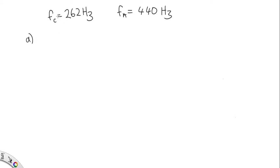So part A asks us to calculate the second and third harmonic frequency on the C string. So this is F2C, which is just two times the fundamental frequency, which gives us 524 hertz.